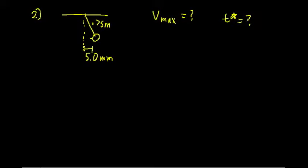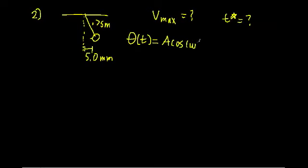You can pause here and solve it on your own if you'd like. There are actually a couple of ways to solve this — you can do it by energy considerations — but the way I'm going to do it is just by the equations of motion. For this system, the equation of motion gives displacement as a function of time equal to A cosine(ωt) plus B sine(ωt).